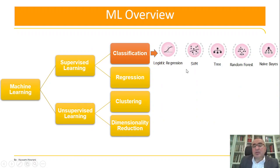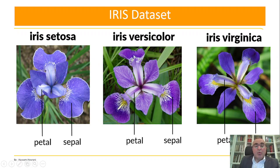Some examples of the methods we will use in classification: logistic regression, SVM, tree, random forest, and naive Bayes. We've already talked about the classes of iris — Setosa, Versicolor, and Virginica — and we said that petal and sepal width and length are the main features that identify the flower.